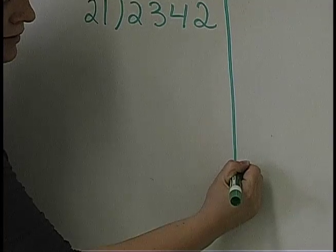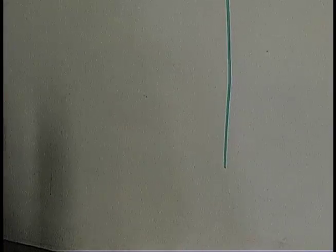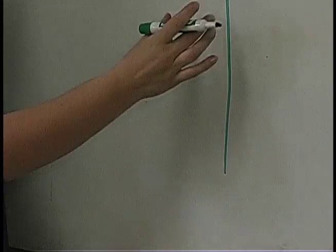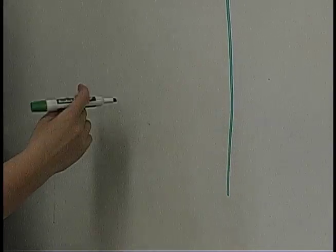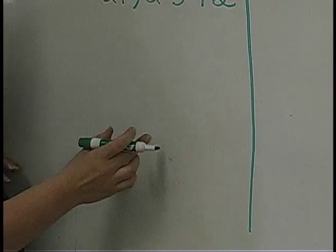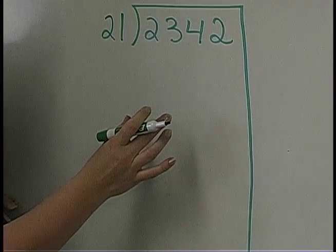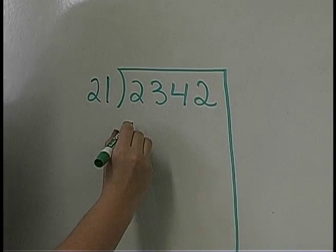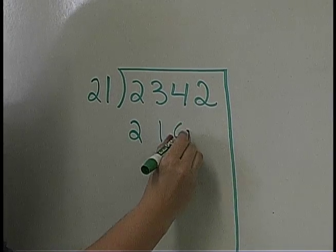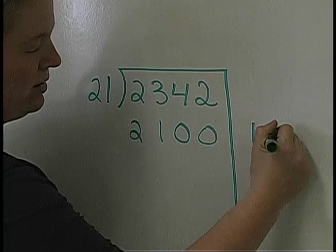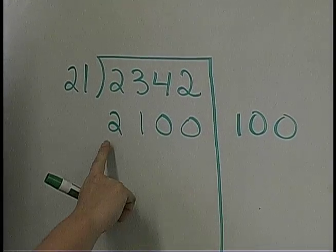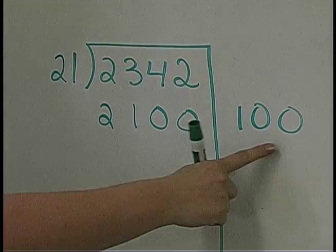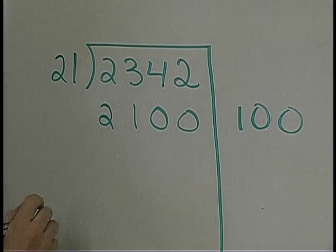They'll start by drawing a long vertical line at the end of their division problem, and they'll say, 'I know that 100 twenty-ones is 2100.' So they'll write 100 here and 2100 here.